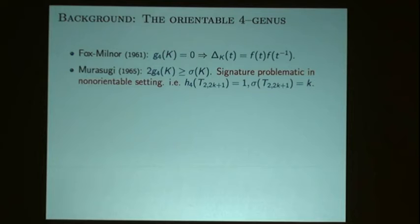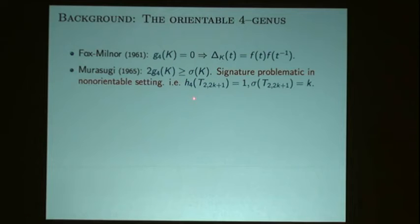The first kind of general result on the four-genus was work of Murasugi showing that the signature bounds the four-genus. This already shows some of the issues that come up when you move to a non-orientable setting: the two-n torus knot has signature going to infinity as you take more and more twists, but they all bound Möbius bands. So there's not going to be any kind of signature invariant that obstructs.